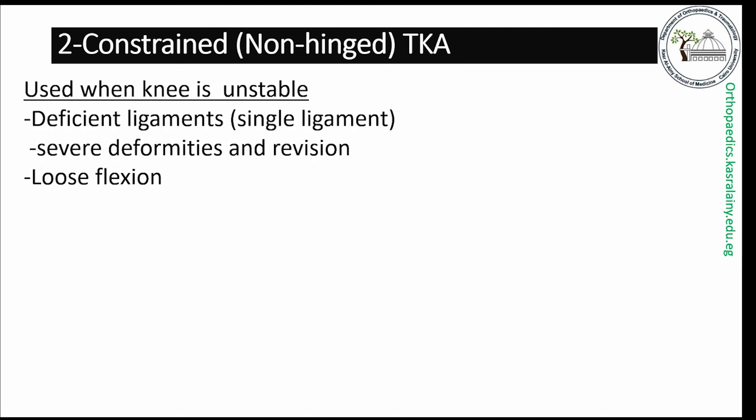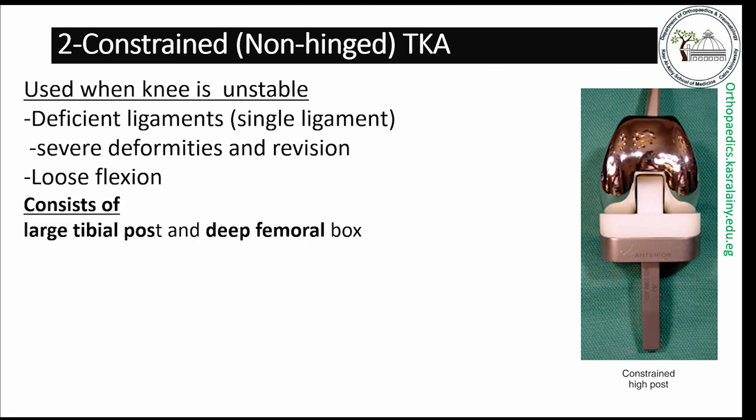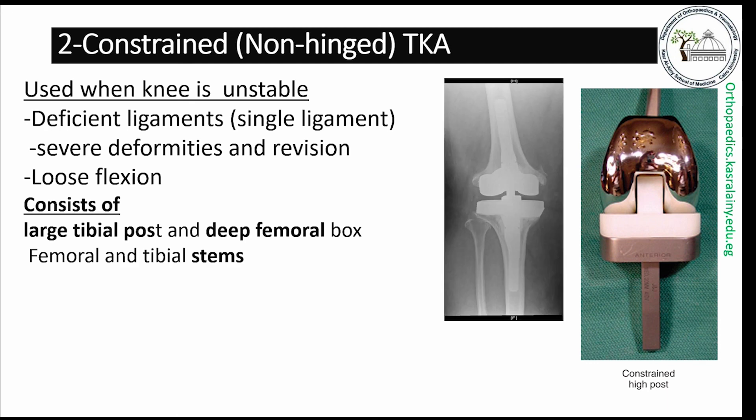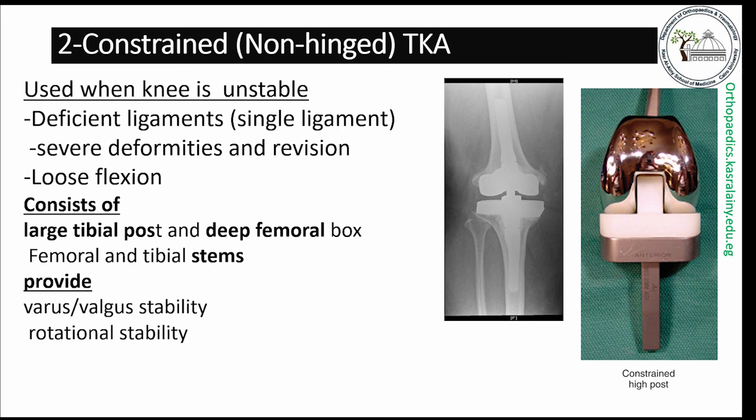The second variety is the constrained non-hinged type, used in unstable knees with single ligament deficiency, severe deformity, revisions, and loose flexion cases. It consists of a long tibial post and deep femoral box supported by femoral and tibial stems to provide force dissipation over a wide area, lessening the risk of aseptic loosening.